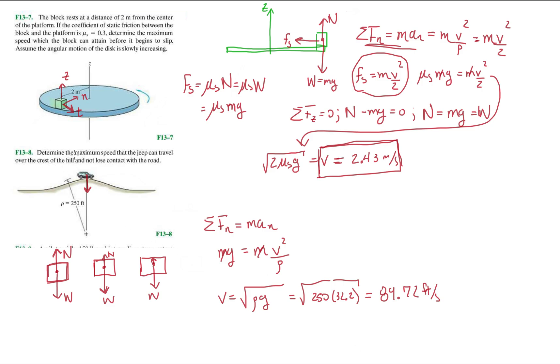Always look at that key word, maximum speed before you lose contact with the road. We're basically saying, how fast can it go before that normal fully disappears. That's it for these two problems. Again, these are just warm-up problems into the equation of motion in the normal and tangential directions. We'll get on with the 13.9 in the next video, so don't forget to follow and like, and I'll see you guys in the next video. Bye.